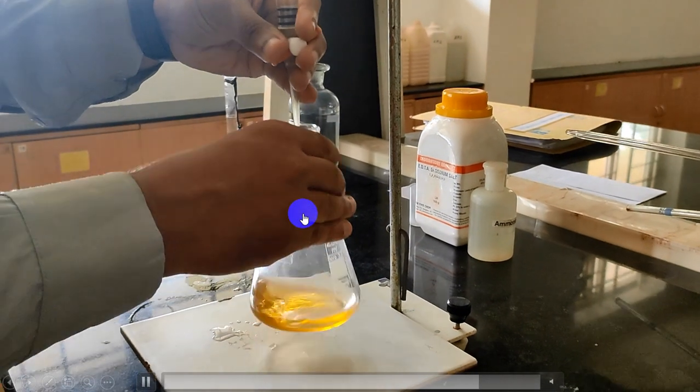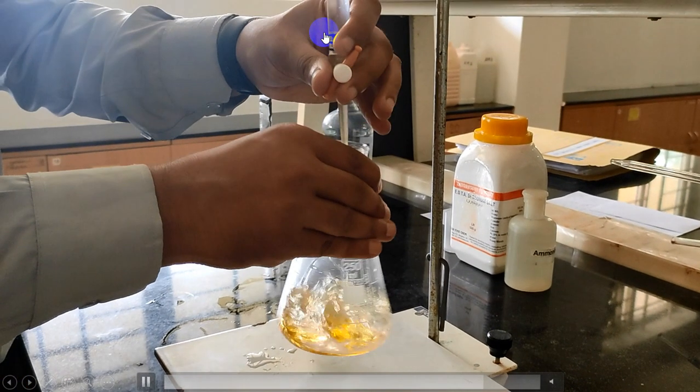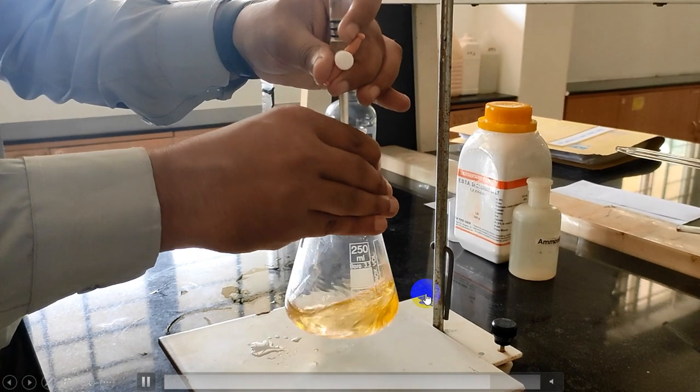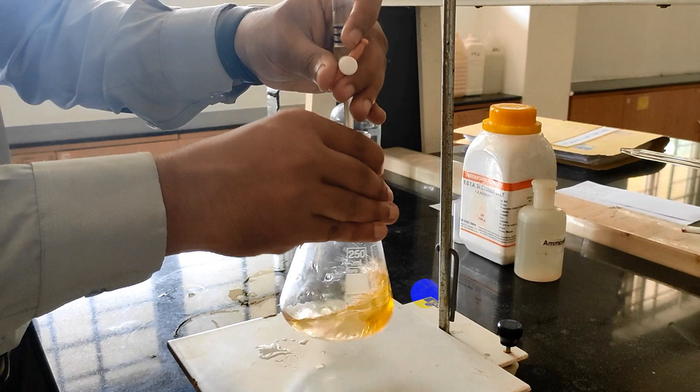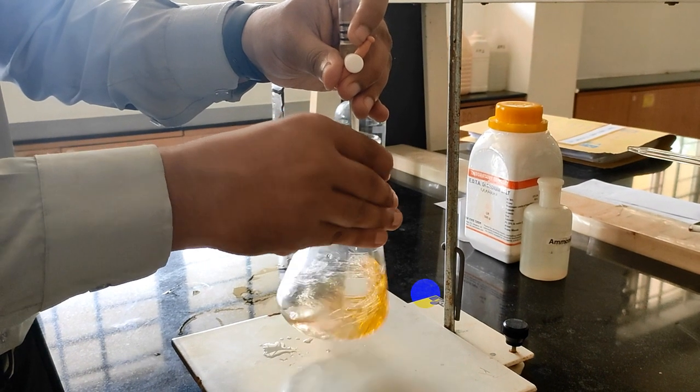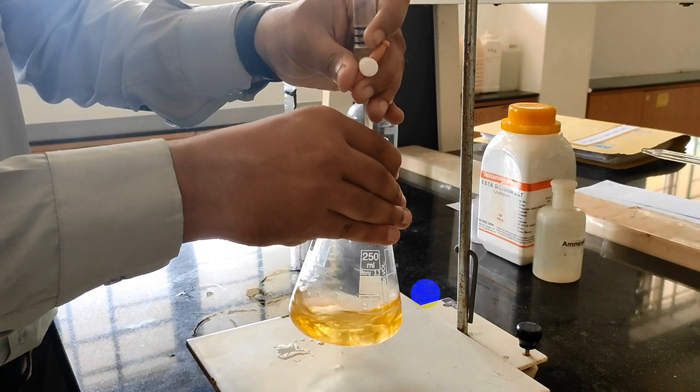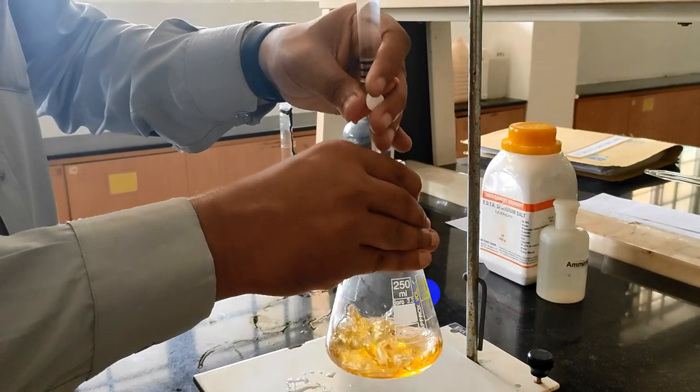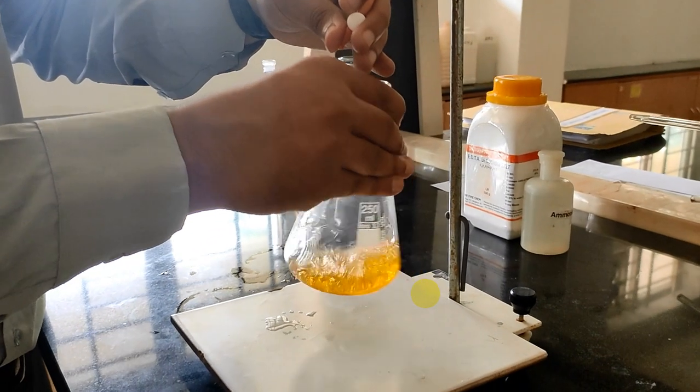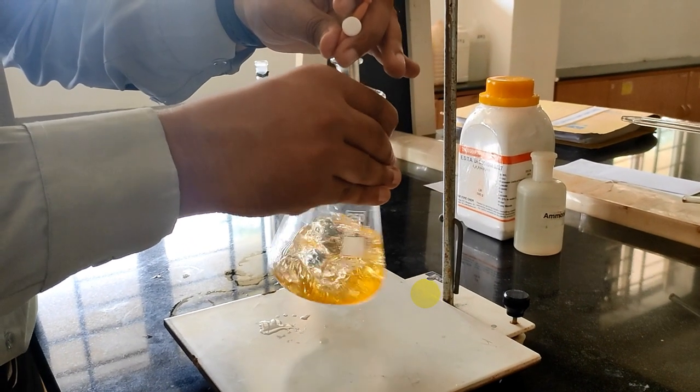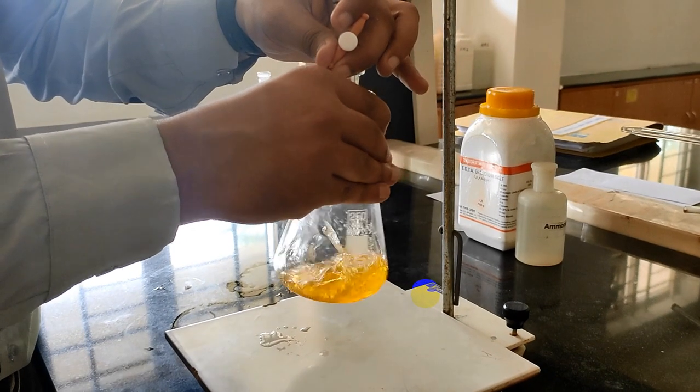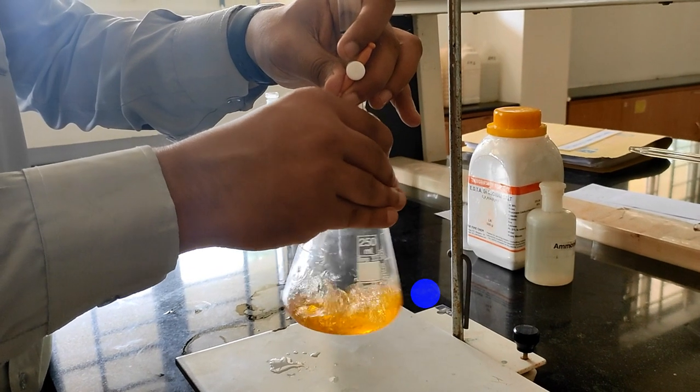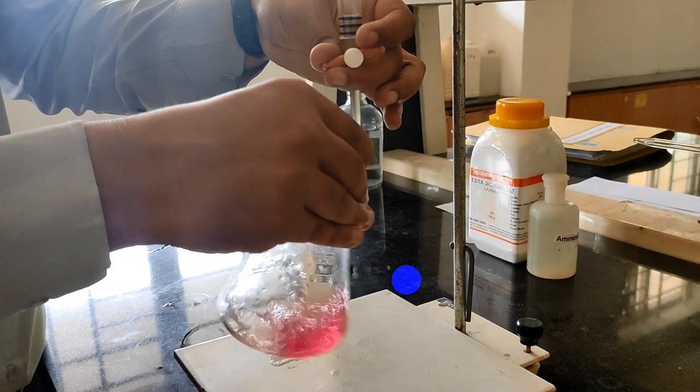Now titrate the solution, sample solution against standard EDTA filled in a burette till the color changes from yellow to violet. That will be your endpoint. Titrate slowly and carefully. In between, mix the solution well by stopping the burette.